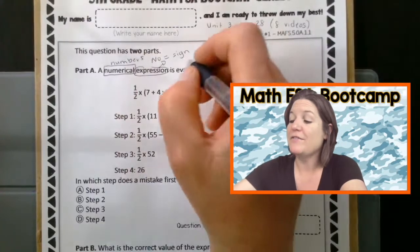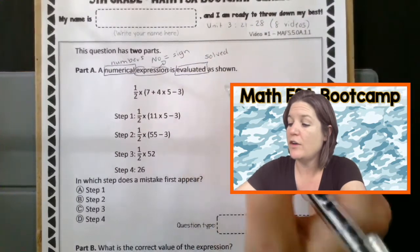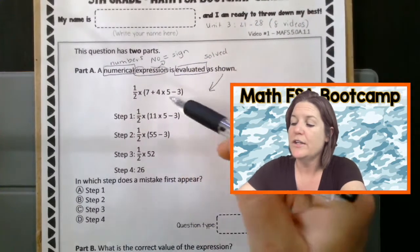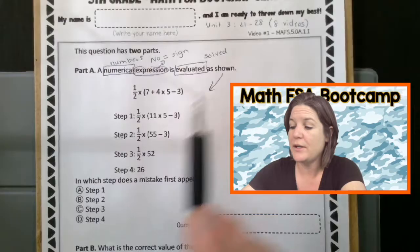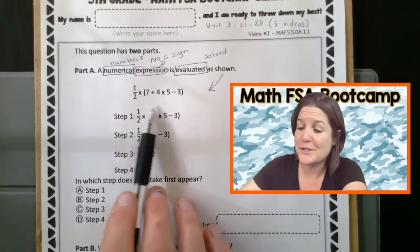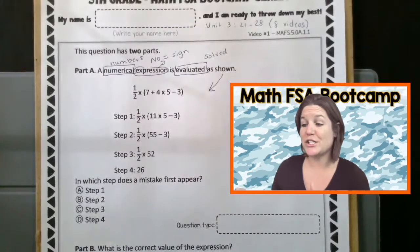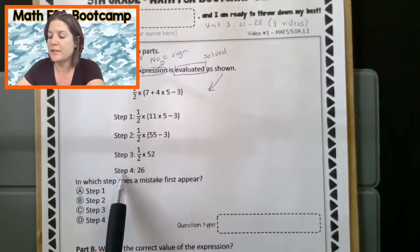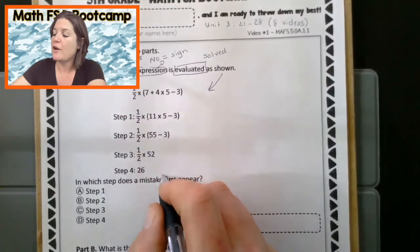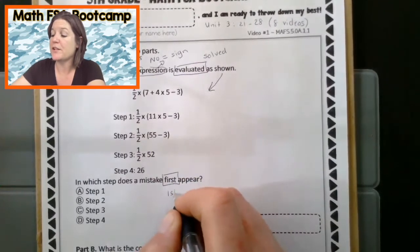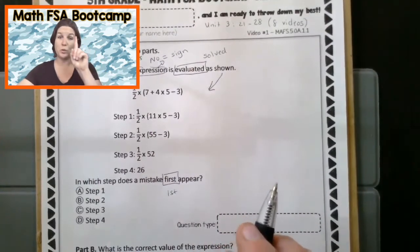So is evaluated. That means it is solved. Solved as shown down there. So we have a bunch of numbers and symbols and expression that has been solved is what's happening. And I see that we have some parentheses and a whole bunch of different operations. So we're going to need the order of operations. So I see that we have a bunch of different steps here. And what our job is, is to, in which step does a mistake first occur? The very first, which means that there could be multiple mistakes, but we just want the first one that happens.